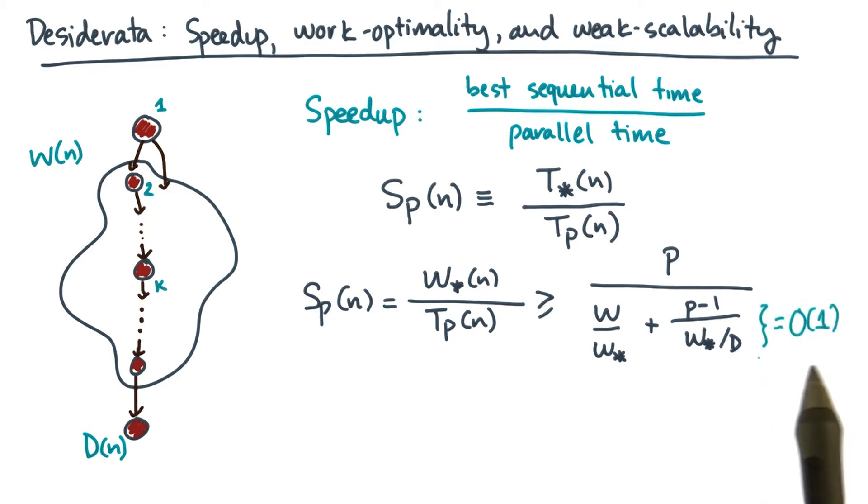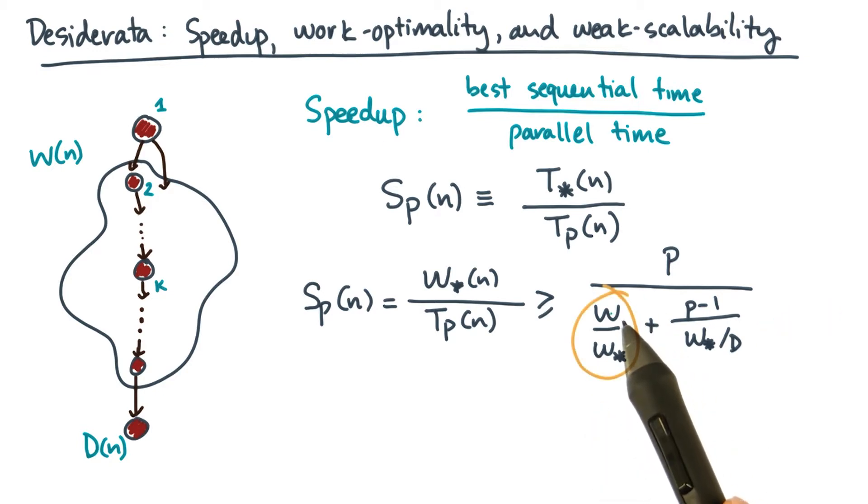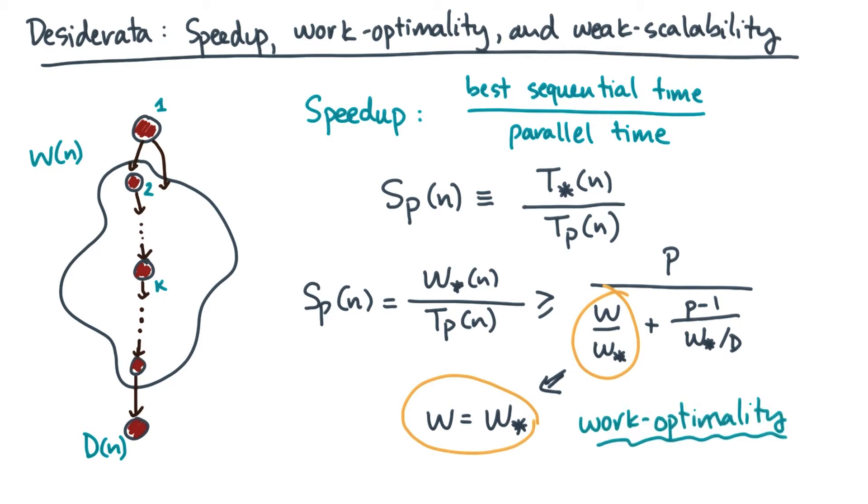So what would it take for this to be true of the denominator? Let's look at each term in turn. For this term to be constant, the work of the parallel algorithm has to match the work of the best sequential algorithm. This principle is something we call work optimality. It's a necessary condition to ensure ideal scaling. Intuitively, it prevents another form of cheating. It says that if you get a very parallel algorithm by dramatically increasing the work relative to the best sequential algorithm, then that's actually bad for speedup.